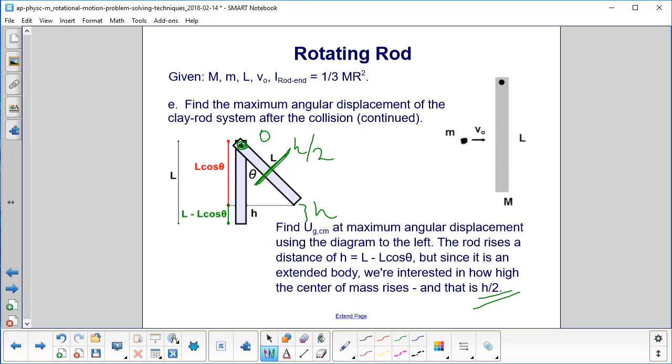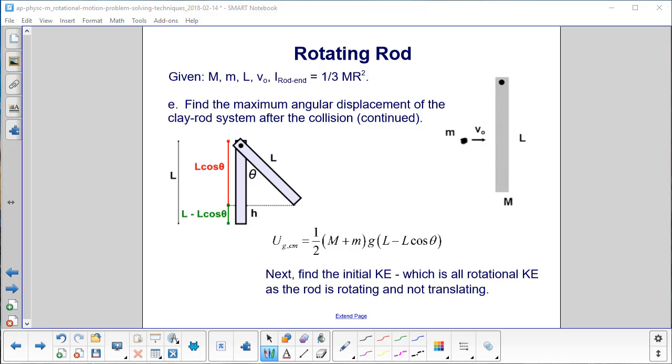Our final gravitational potential energy, when the rod gets to the top right as it stops and before it starts falling down, will be 1 half mgh. Here's our h term, but we said the center of mass only goes up h over 2. So that takes into account the height. Here's a total mass. Make sure you add the mass of the clay. And here's g. So that is our final gravitational potential energy.